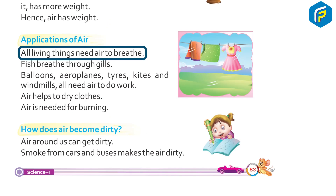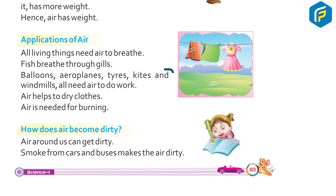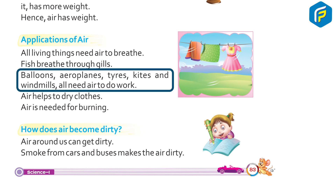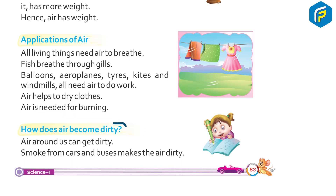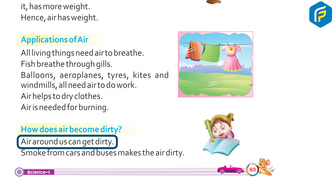Uses of air: All living things need air to breathe. Fish breathe through gills. Balloons, aeroplane tires, kites, and windmills all need air to do work. Air helps to dry clothes. Air is needed for burning.